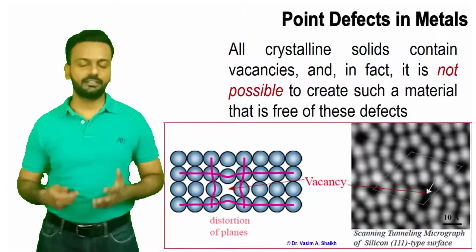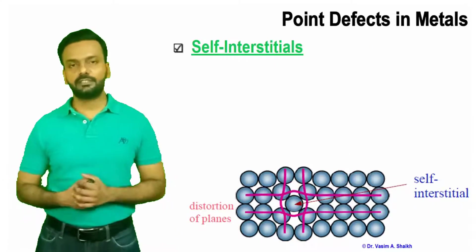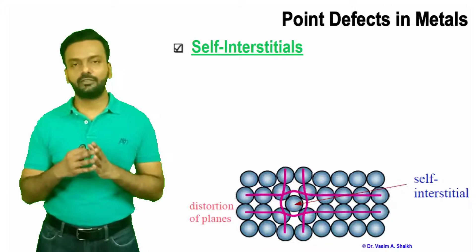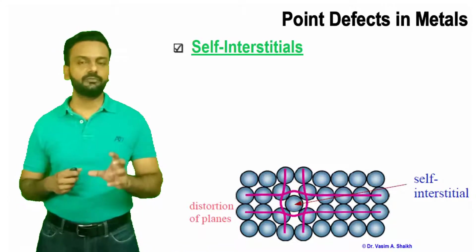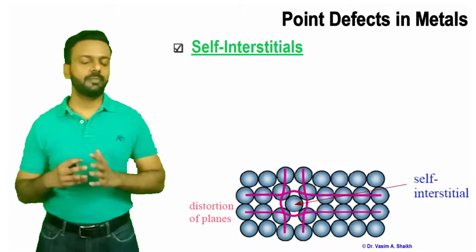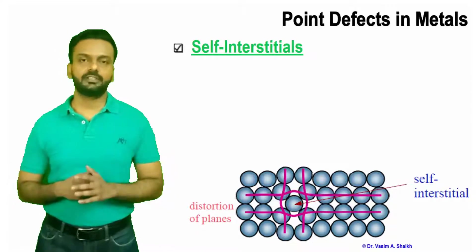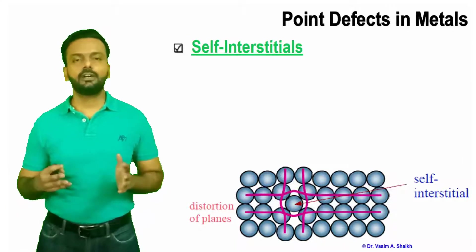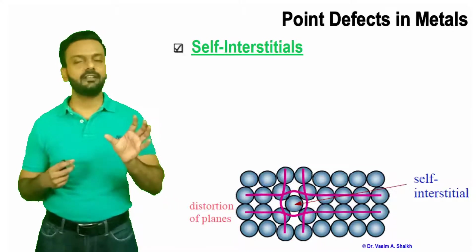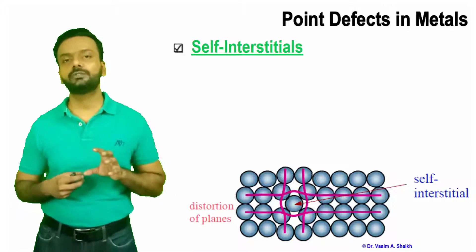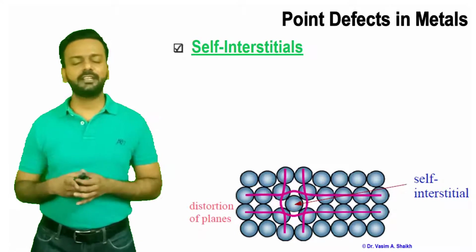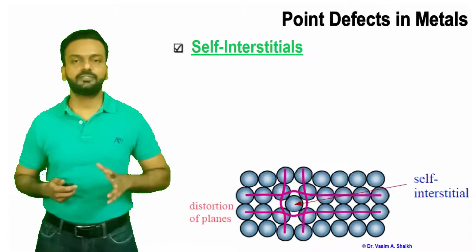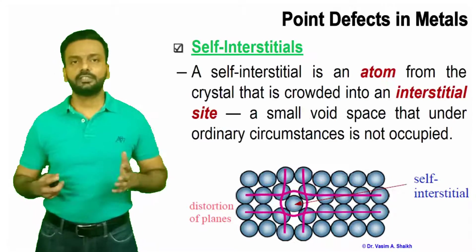All crystalline solids contain vacancies, and it is not possible to create any material without such defects. Next is self-interstitial. In a normal crystal structure there are always some vacant interstitial sites. As we have seen when studying atomic packing factors of BCC, FCC, and HCP structures, 100% of sites are not filled — there will always be some gap in the material. An atom missing from somewhere may go into one of these interstitial sites, creating tension, distortion, and localized stress.